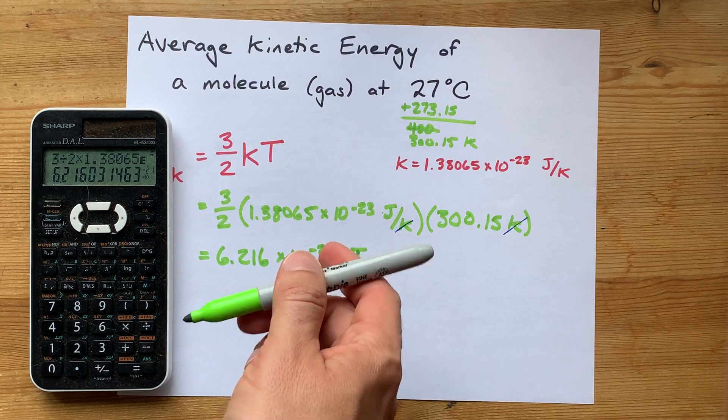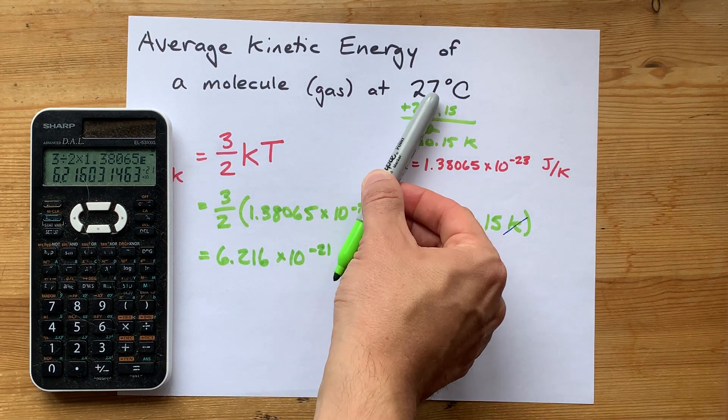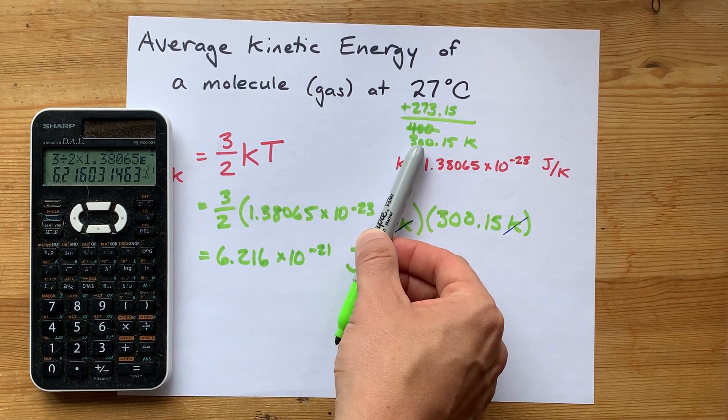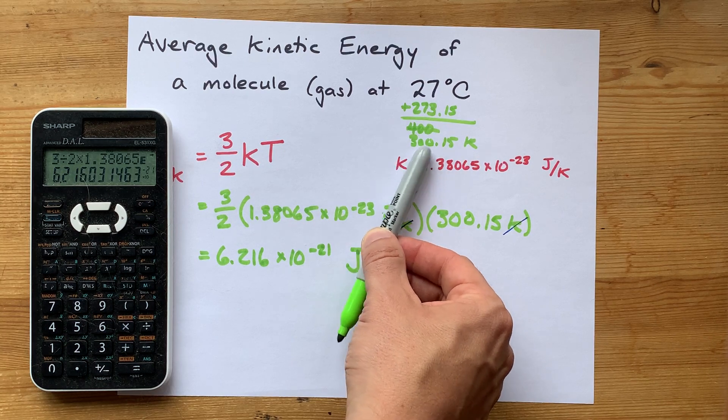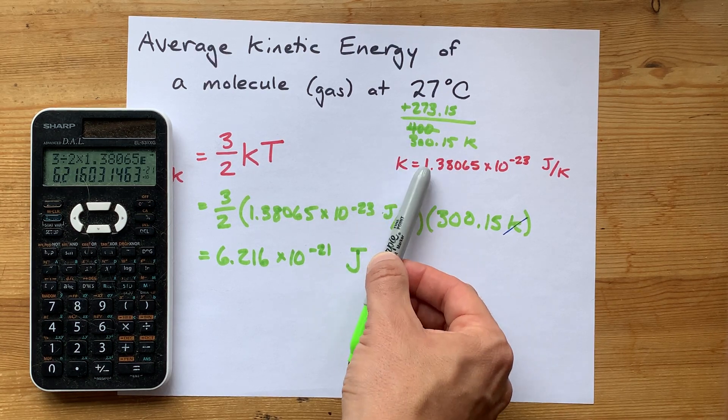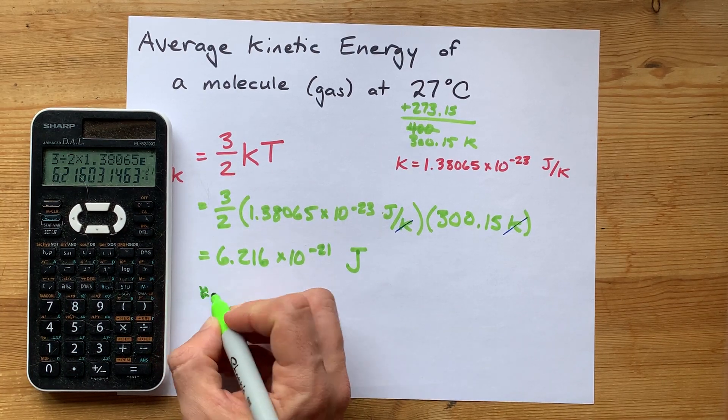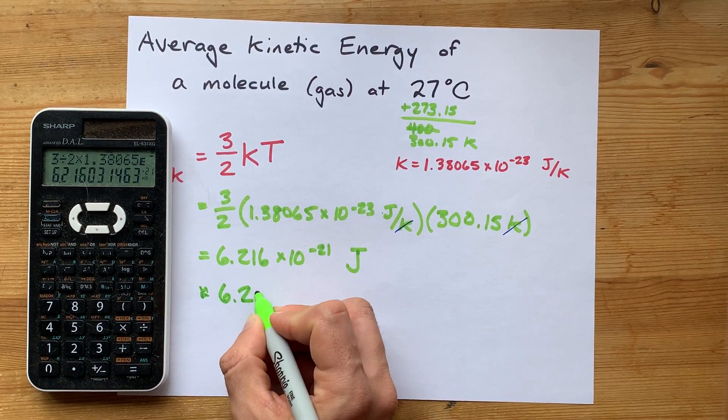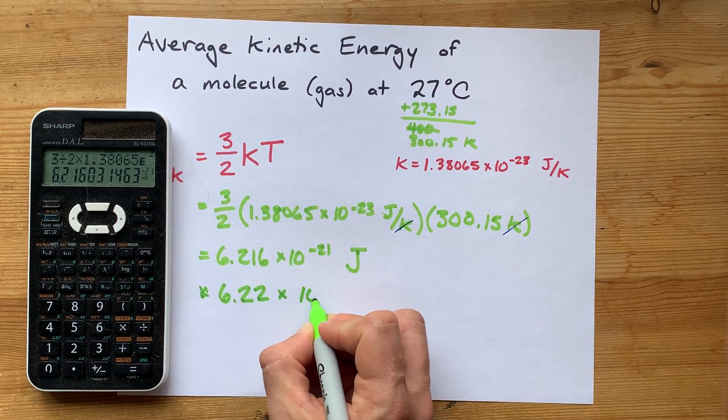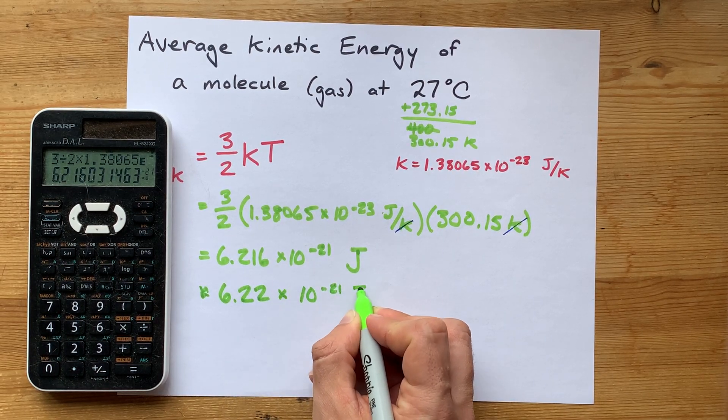Now, in terms of significant figures, this had no decimal places. So the 300, it was only three sig figs here. This was six significant figures, and these are exact. So I need to round this to three significant figures. The answer is 6.22 times 10 to the negative 21 joules.